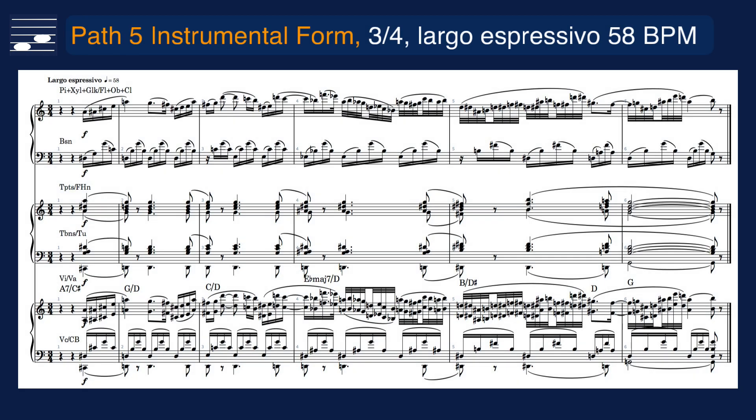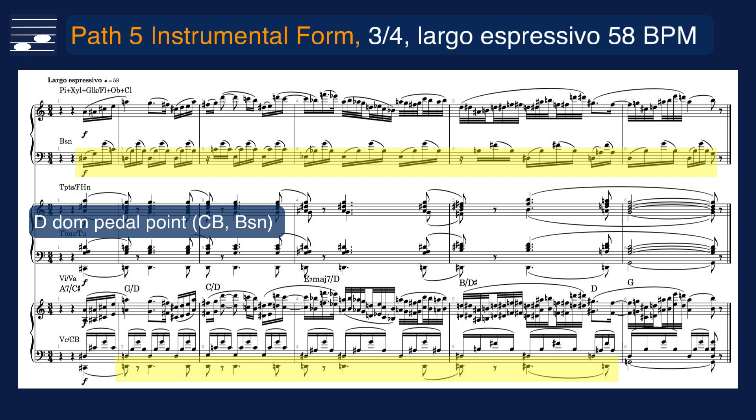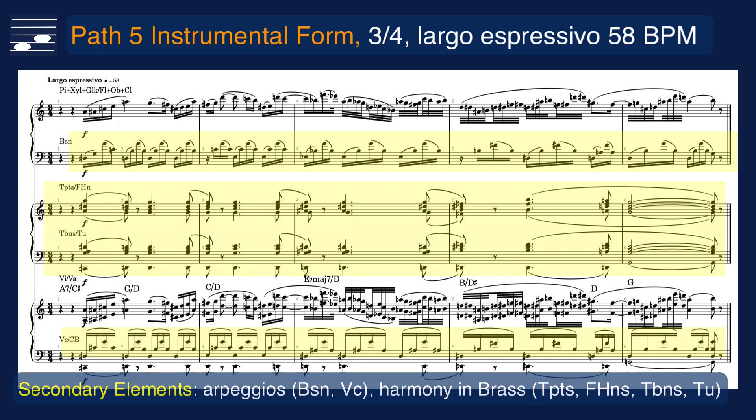The instrumental form for path 5 is a short largo espressivo orchestral tutti in 3-4 time signature with one chord per measure. The pedal point is in the contrabass and in the lower notes of the bassoon and cello arpeggio patterns. The primary element is the unisono melody for woodwinds, percussion and high strings, starting in sixteenth notes and accelerating towards the apex climax at the end. The secondary elements are the sixteenth note arpeggios in the bassoon and cellos, and the wide range harmony setting for brass group.